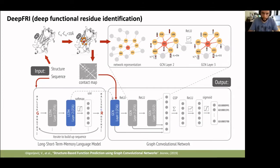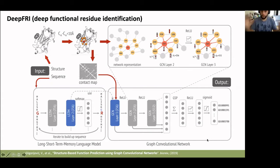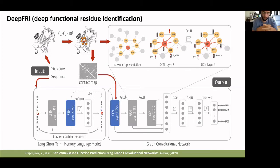An important thing to note is that during GCN training we fix the weights of the LSTM language model — we only use it as a feature extractor. Training in this semi-supervised way — with a fully unsupervised language model and a supervised GCN for function prediction — leads to a huge boost in accuracy in function prediction, as you will see in the next few slides.